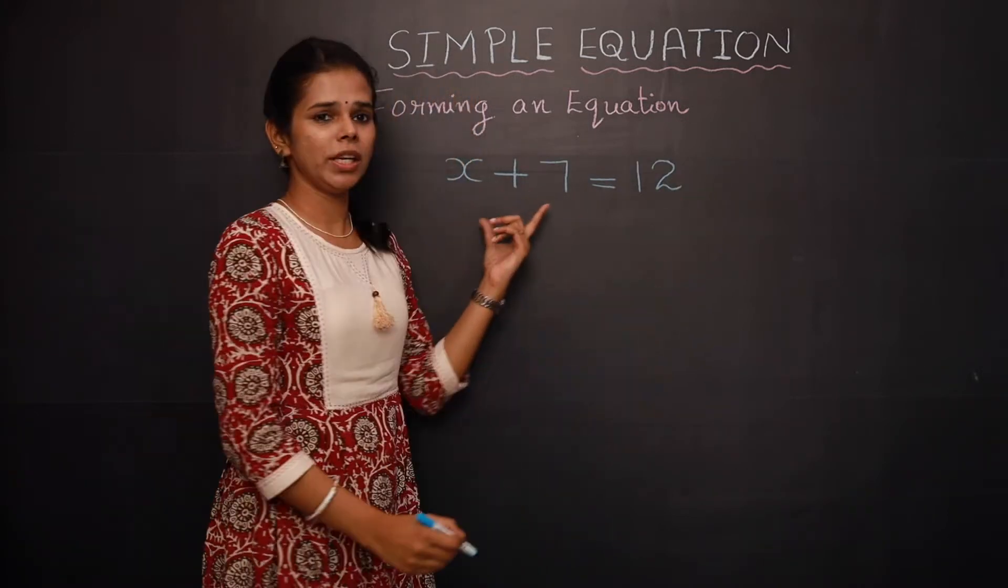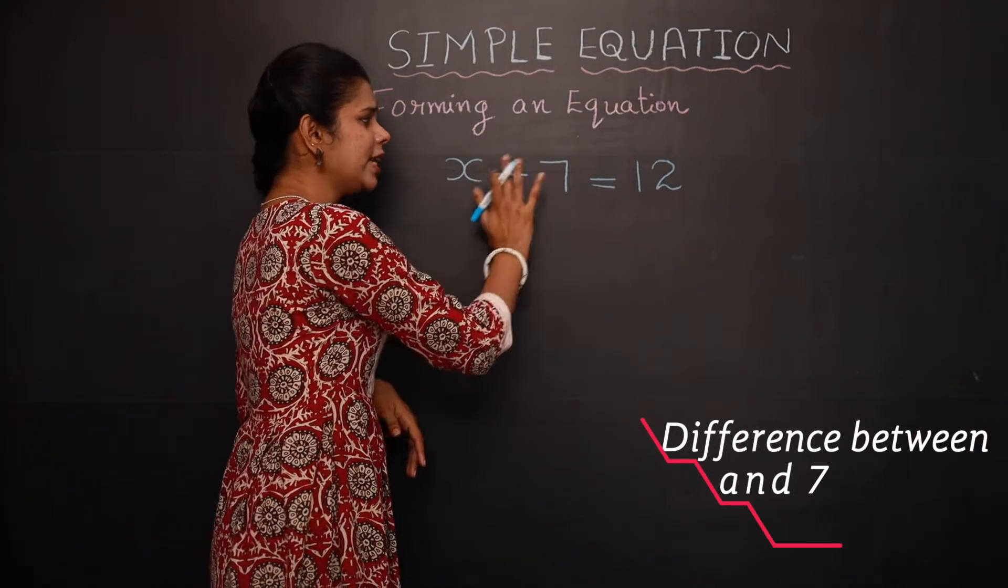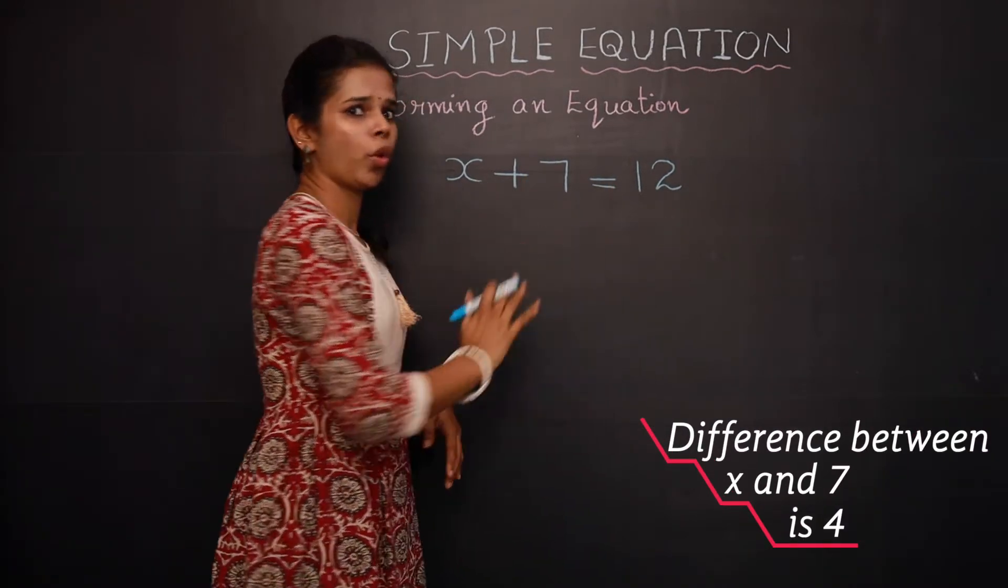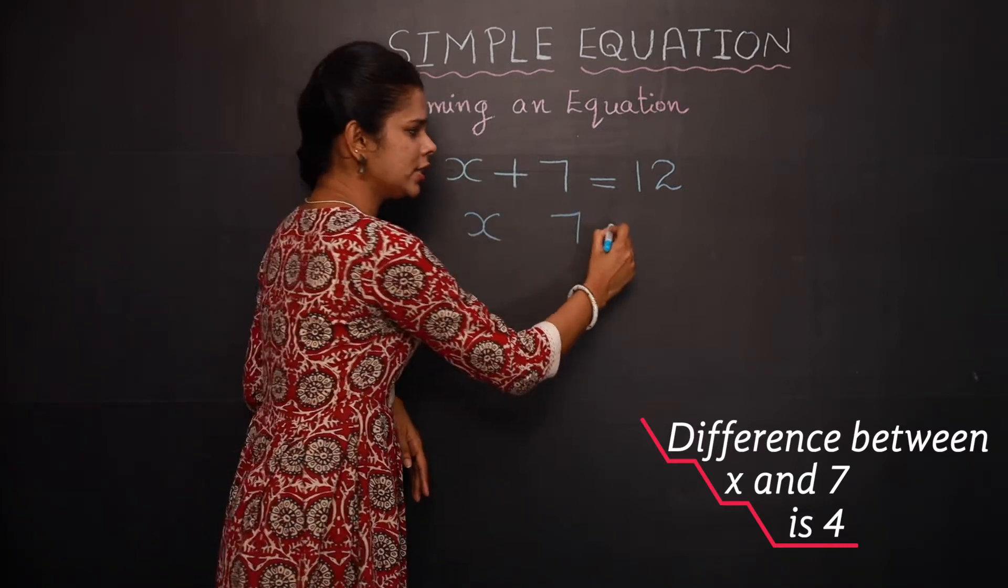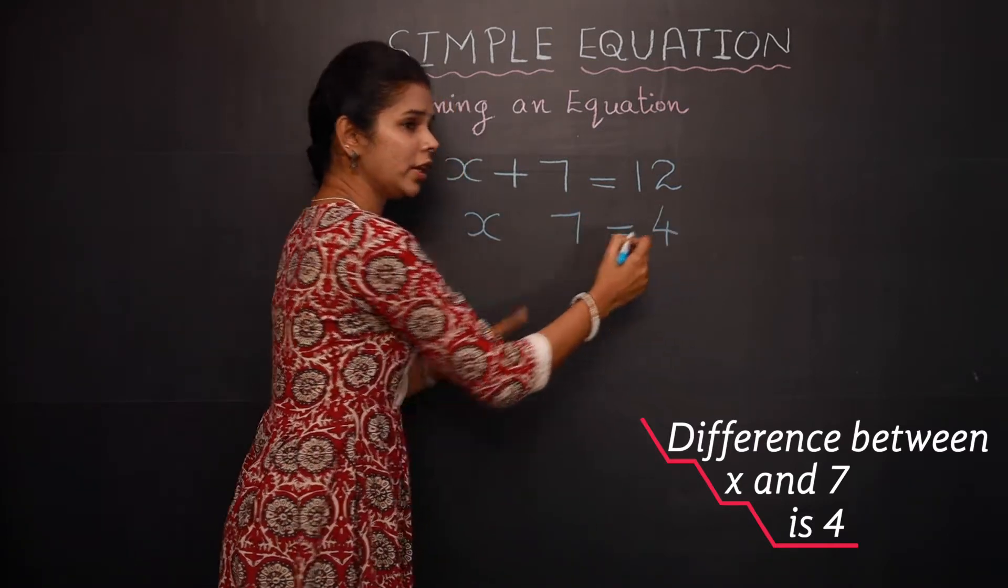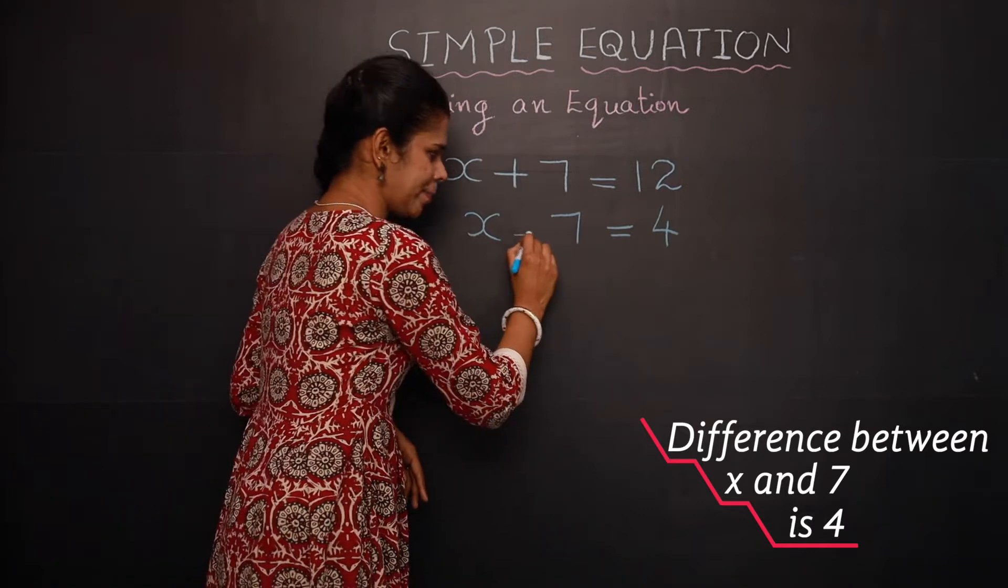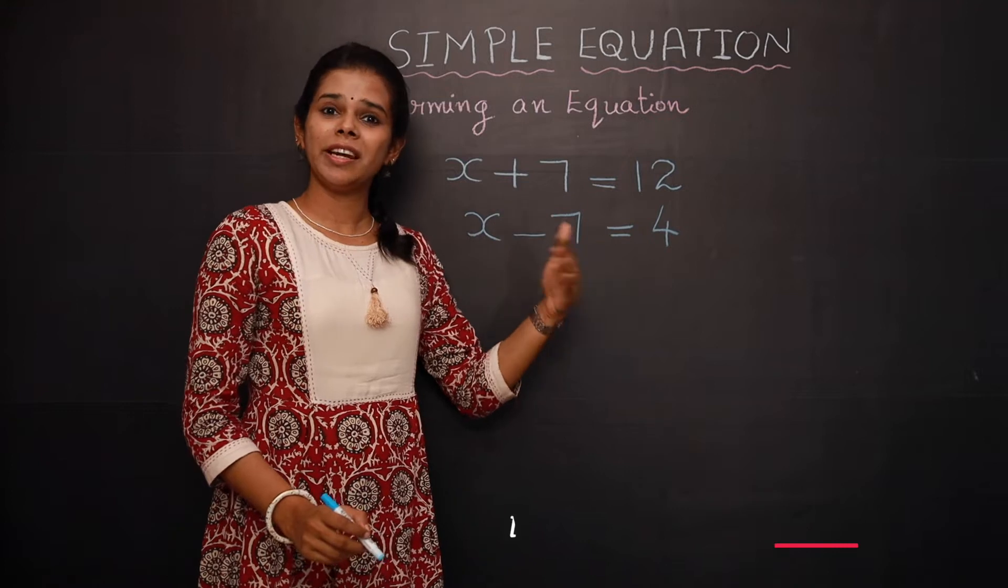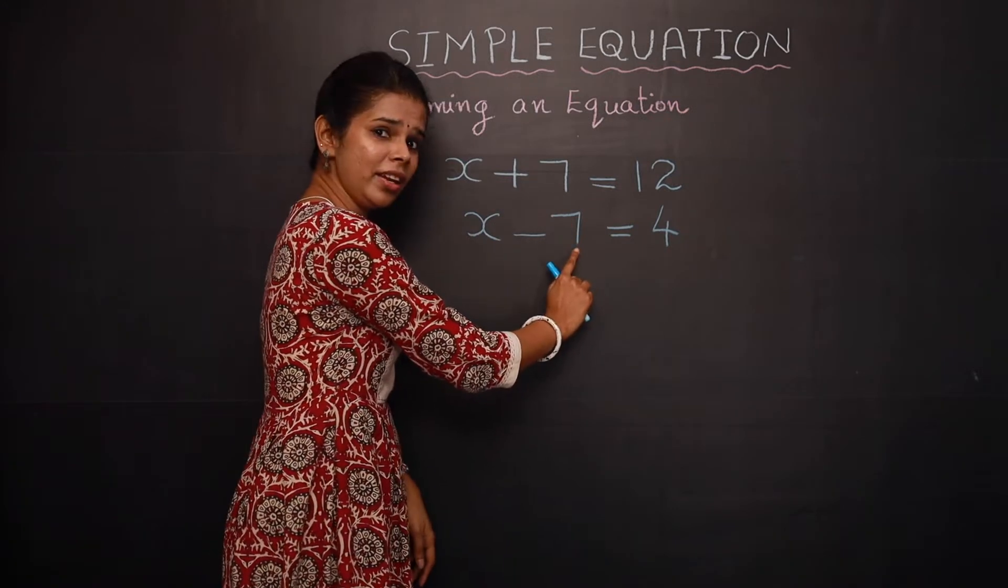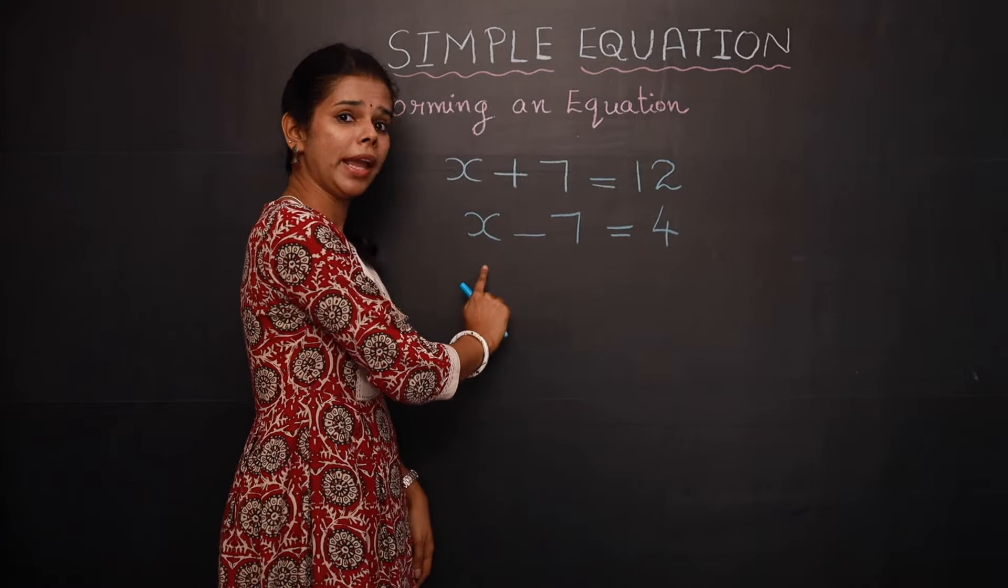The difference between x and 7 is 4, so x minus 7 is 4. Here the difference indicates subtraction, but this equation can also be written in another statement by saying 7 taken away from x gives you 4. So taken away is also a term that indicates subtraction.